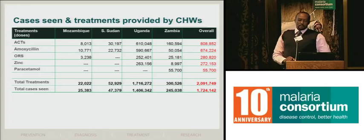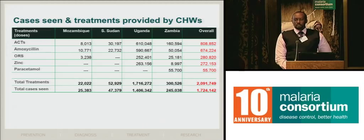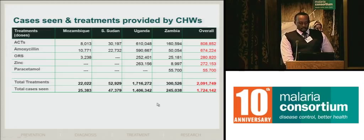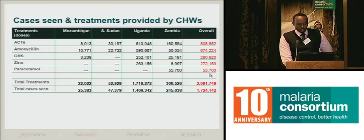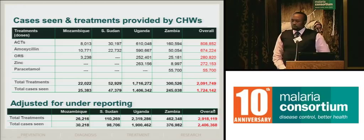Going on to the cases and treatments provided by the community health workers, all still from the routine data: we have provided treatments to about 1.7 million cases, providing 2 million treatments. The majority has been from Uganda, and most of the treatments have been ACTs and amoxicillin. There's also been zinc and paracetamol for the case of Zambia. Adjusting for under-reporting, we estimate we've provided about 2.3 million treatments to about 2.4 million cases.